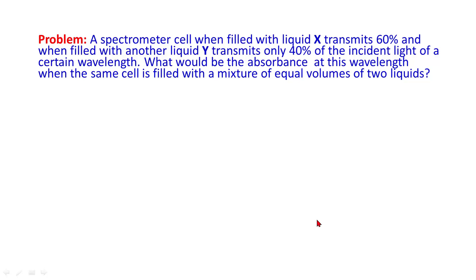Another problem: a spectrometer cell when filled with liquid X transmits 60% and when filled with another liquid Y transmits only 40% of the incident light of a certain wavelength.